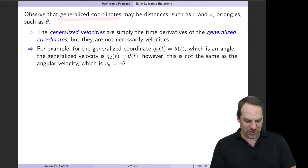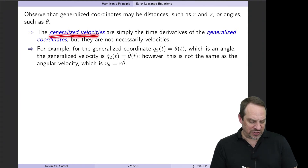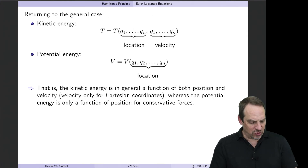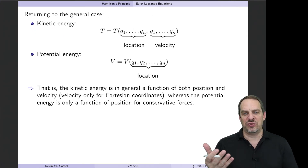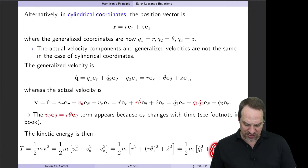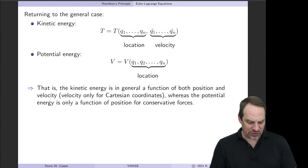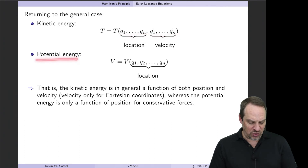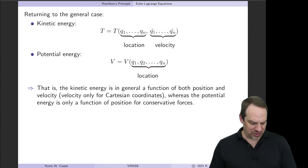Notice that generalized coordinates can be distances such as r and z, or angles such as θ — they may have different units. The generalized velocities are simply time derivatives of generalized coordinates and are not necessarily velocities with velocity units. For kinetic energy, since v_θ = r·θ-dot, T can depend on both q's and q-dots. The potential energy V, on the other hand, only depends on positions — the generalized coordinates q — not q-dots. We'll use this to get the general Euler-Lagrange equations.